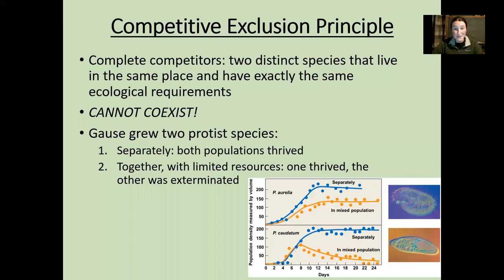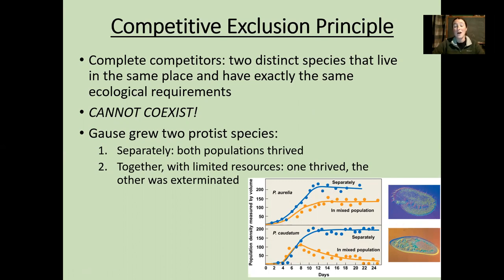Hello, everyone. In this video, I'm going to continue our previous discussion about competition — this interspecific interaction in which both parties lose at least a little bit. We were talking about the competitive exclusion principle, which essentially says that two species who occupy the same niche cannot coexist. There's this famous example of two proto species grown separately just fine, but when you put them together, there is a clear winner and a clear loser.